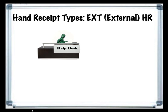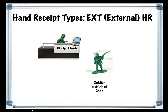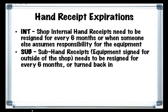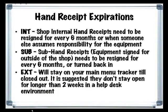A third type of hand receipt is the external hand receipt, used primarily for turning in equipment to get fixed, such as in a help desk environment. A soldier from outside the shop turns in his equipment to the shop, it is entered in the database, and the database generates an external hand receipt, or 2062 with a document number beginning with EXT. The shop soldier prints it out, signs for it, and gives the outside soldier a signed copy. This database will remind you when a 2062 is set to expire. By default, internal and sub hand receipts must be re-signed or cleared every six months. External hand receipts stay on your main menu tracker until closed, and it is suggested they don't stay open longer than two weeks in a help desk environment.